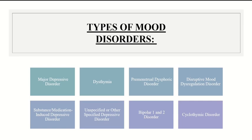Bipolar 1 is characterized by going from a depressed episode — two weeks or longer — to a manic episode, which is one week or longer and is the opposite of depressed. Bipolar 2 is when you go from a depressed episode to a hypomanic episode, which is a lower-level manic episode. Cyclothymic disorder is basically a lower-level Bipolar 1 and 2 that persists for more than two years.